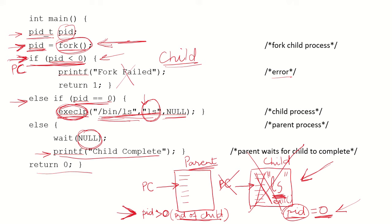This is how the exec, exit, and fork system calls work.